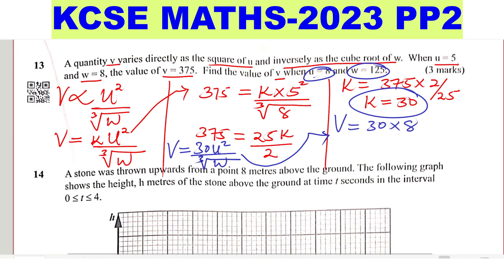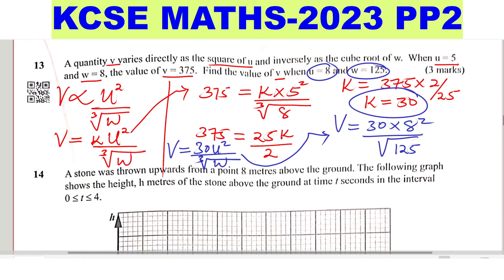So that would be 8 squared, divided by the cube root of W is 125. So you work out this, this will give 30 times 64 divided by the cube root of 125 is 5. And this will give V as 30 times 64 divided by 5, give 384.